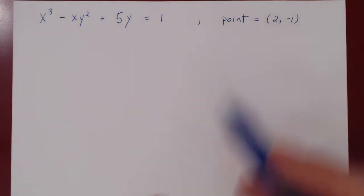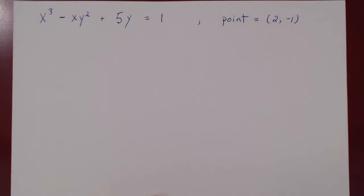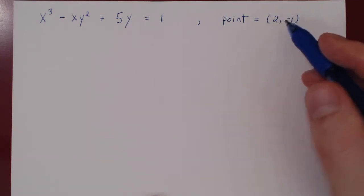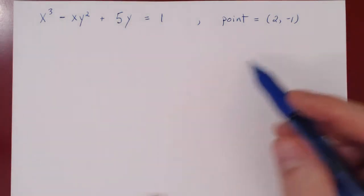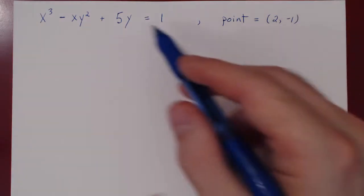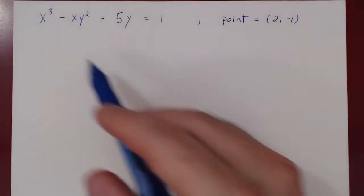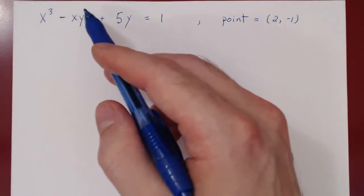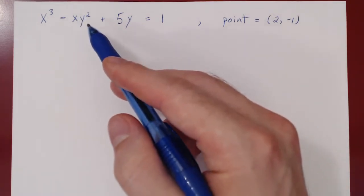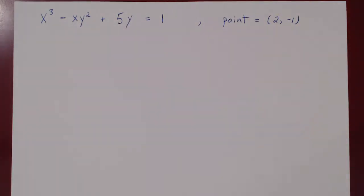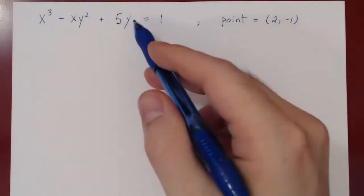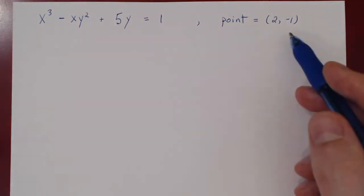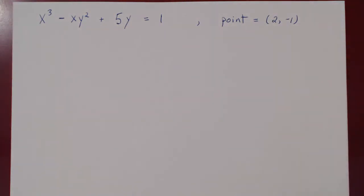We want to find the equation of the tangent line at a point. All we need is the derivative, and hence we'll use implicit differentiation. Let's verify first that this point is indeed on our curve. A point is on the curve if it satisfies the equation. Replacing x by 2 and y by negative 1: 2 cubed is 8, minus 2 times negative 1 squared gives 8 minus 2 equals 6, plus 5 times negative 1, so 6 minus 5 equals 1. This point satisfies the equation, so it is indeed on the curve.